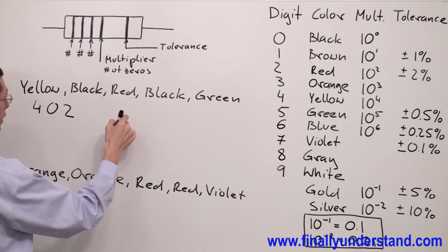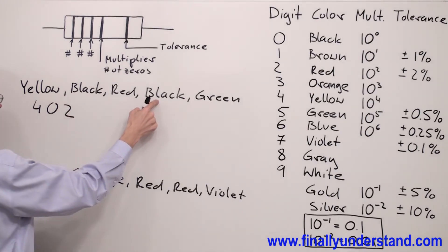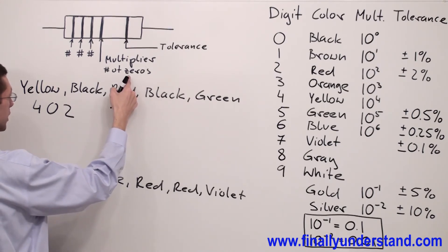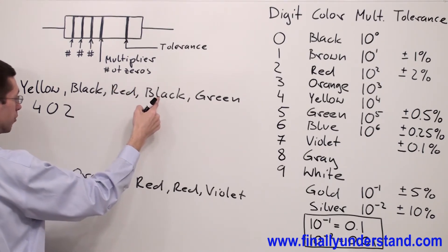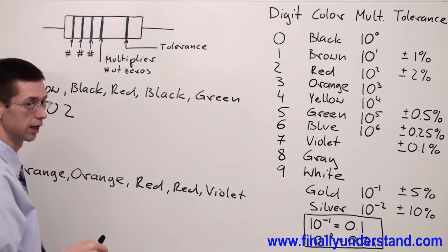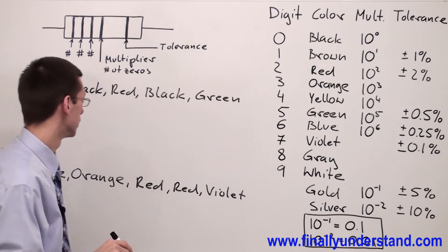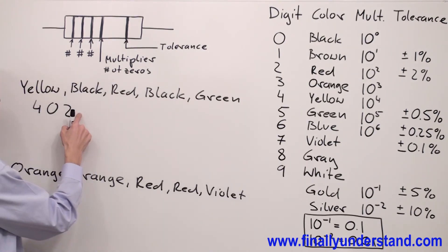We have black at the fourth position, which is the multiplier. This is the number of zeros. Anytime we have black, it means we have no digit, no zeros. That's why I'm not going to write anything.